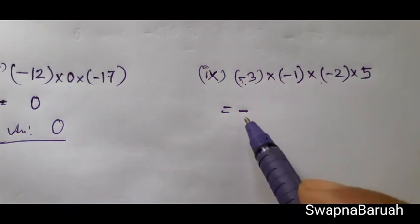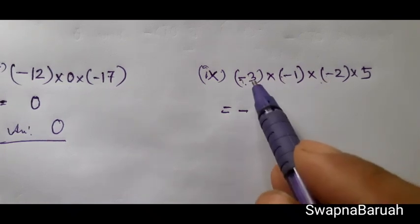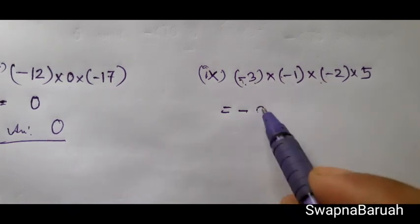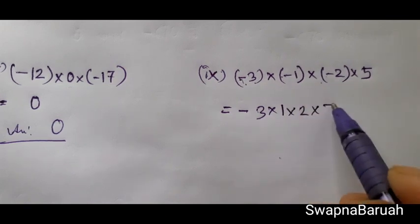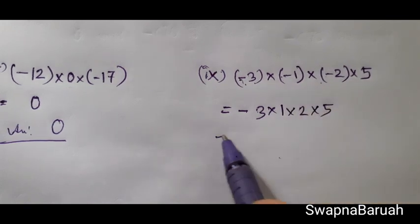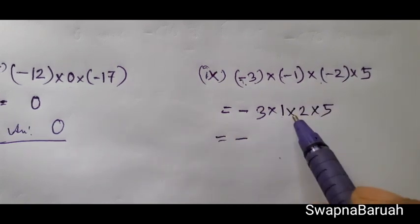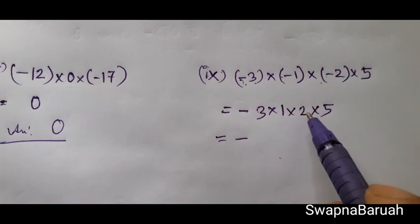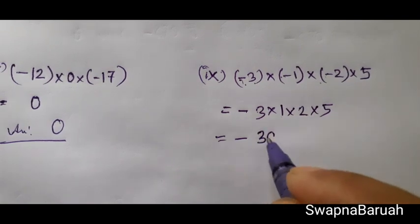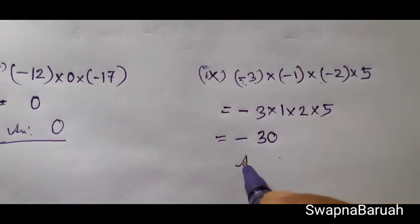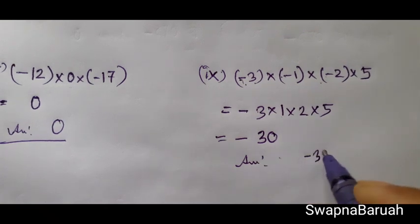3 minus 1. So we will have 2 numbers. 2 into 5 minus 3, 2 into 6, 1 into 6, 1 into 6. The answer is minus 30.